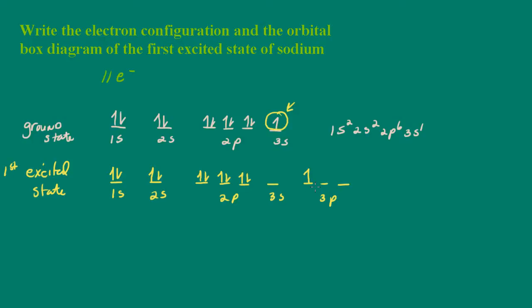So the electron configuration then would be written as 1s2, 2s2, 2p6, and we don't have an electron in the 3s, so that would be 3p1.